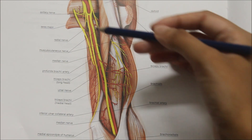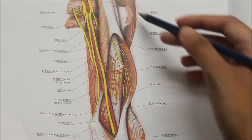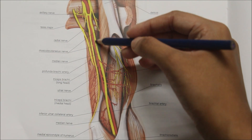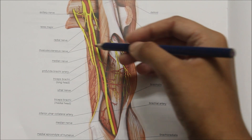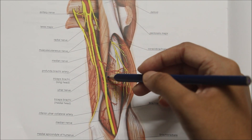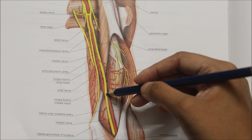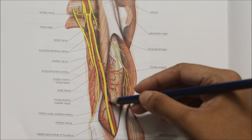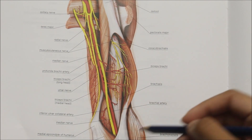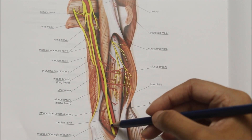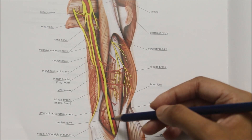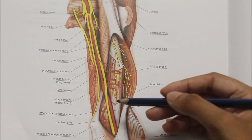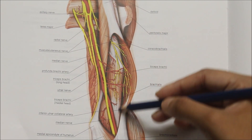Now moving on to the relations of the median nerve. In the arm: in the upper part it is lateral to the brachial artery; in the middle it is anterior to the brachial artery; and in the lower part it is medial to the brachial artery. In the cubital fossa, the median nerve lies medial to the brachial artery, behind the bicipital aponeurosis and in front of the brachialis muscle.